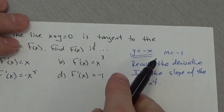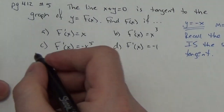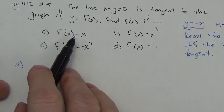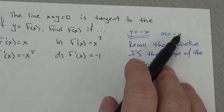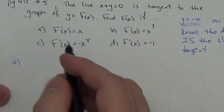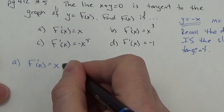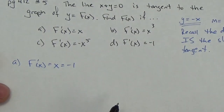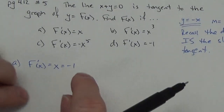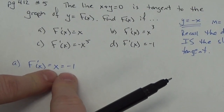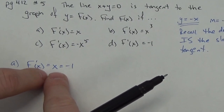Now that I know the slope of the tangent is negative one, I can look at all of these. Let's take a look at part a. This tells me the derivative is equal to x. I know that at some given point, that's got to equal negative one. So I need the derivative — which the question tells me is equal to x — to equal negative one. So where does x equal negative one? Where x equals negative one. So immediately I have the x-coordinate: this is the x-coordinate along the function where the derivative equals negative one.